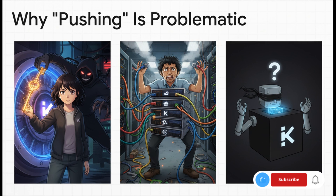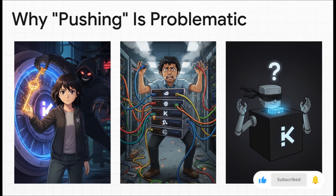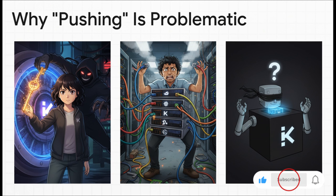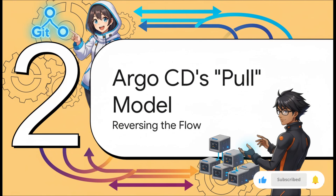It's also just messy — you end up having to install kubectl, Helm, and all sorts of tools on your build servers. But honestly, the biggest problem is that black box: once the CI tool pushes the change, it washes its hands of the situation. Its job is done. It has no idea if your application is actually running healthy or completely on fire.